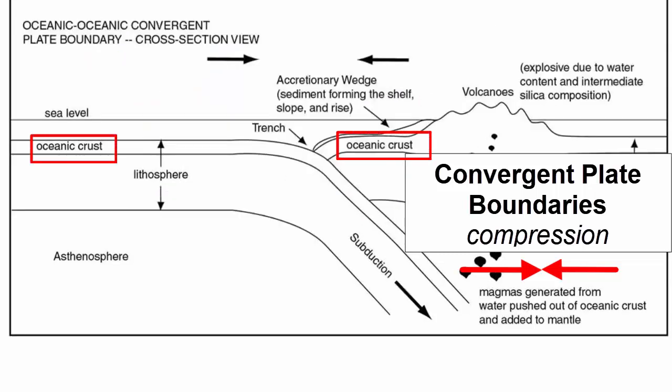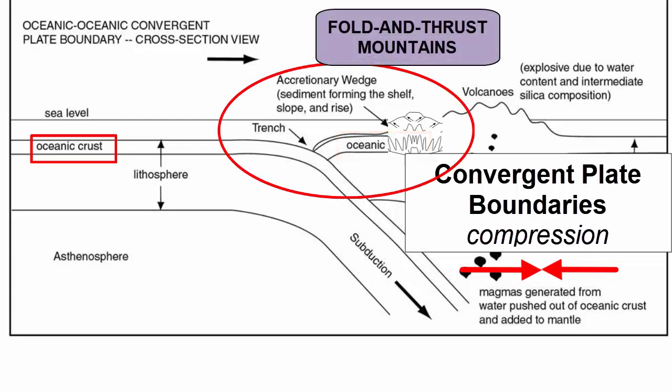When the leading edge of both converging plates consists of oceanic crust, the densest one will subduct, and the accretionary fold and thrust mountains will form just like in the previous subduction zone example. The main difference is that oceanic crust is on average one-tenth the thickness of continental crust, so these fold and thrust mountains will not be as thick as when formed at the edge of continental crust.